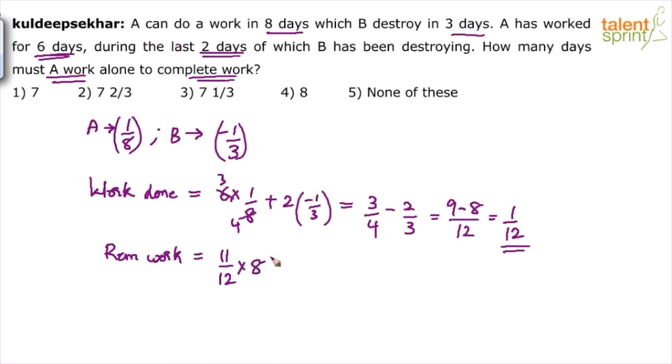Total work can be done in 8 days. If you want to understand in details: total work of 1 unit can be done in 8 days. 11 by 12 will be done in... So 11 by 12 into 8 by 1. That's what we are doing, 11 by 12 into 8 by 1. Simplify this.